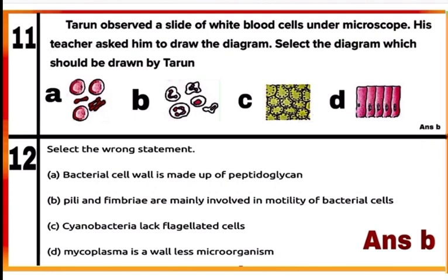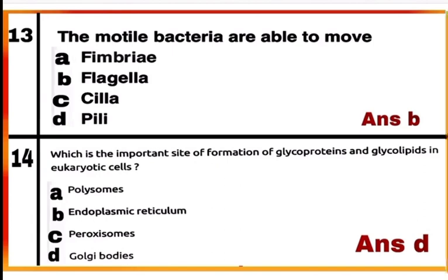Question 12: Select the wrong statement. Statement B is wrong — pili and fimbriae are not involved in motility of bacterial cells; rather, they help in attachment of bacteria to rocks in streams and also to host tissue. Question 13: The motile bacteria are able to move by option B — bacteria move with the help of flagella.